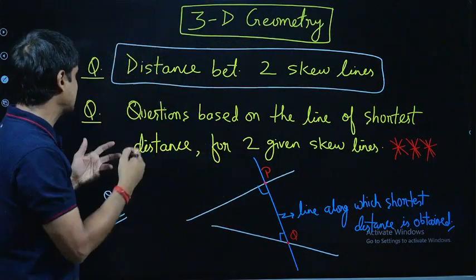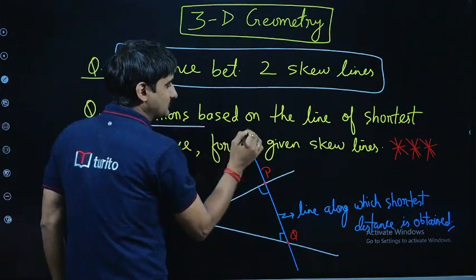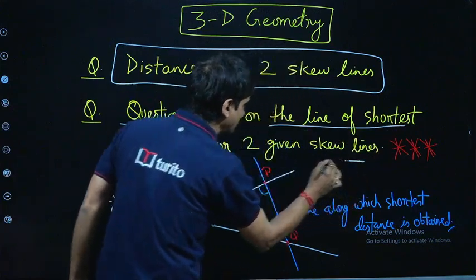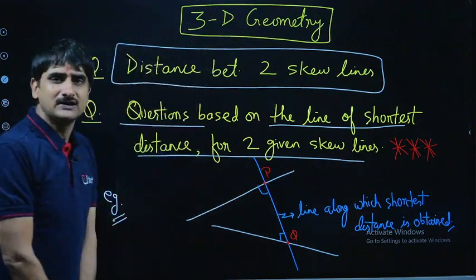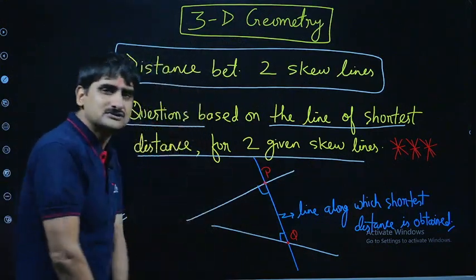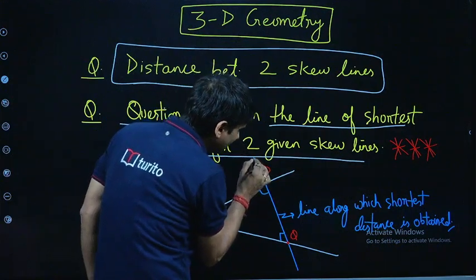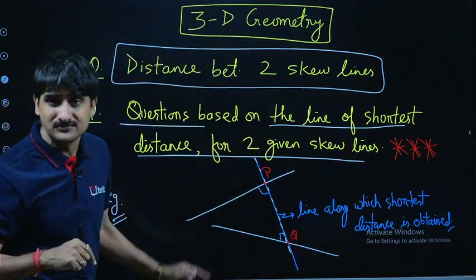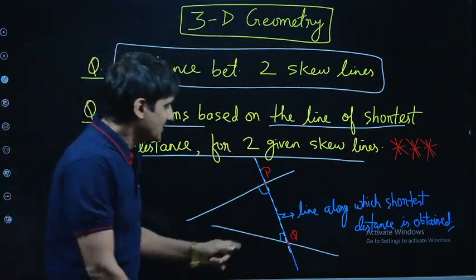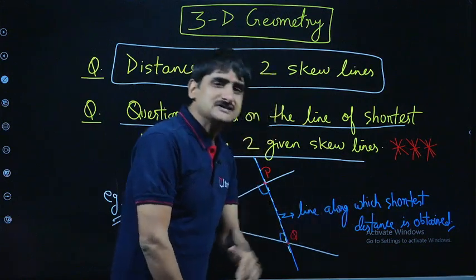Next, this is an extremely important question based on the line of shortest distance for two given lines. Let me do the figure here. Let's say these are two skew lines. What I mean is the question based on this line, a line which is perpendicular to both the skew lines.